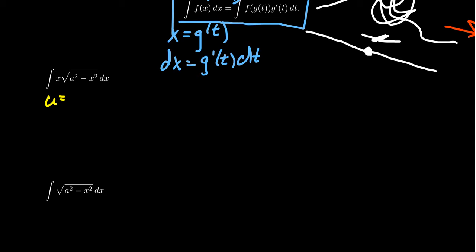You take u to be a squared minus x squared. Then du would equal negative 2x dx, for which case we then need a negative 2 right here. So, we'll divide by negative 2 to compensate. Using this technique of u substitution, you end up with negative 1 half the integral of u to the 1 half power du.